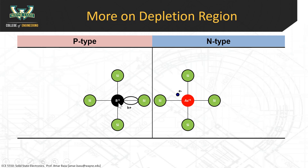Similarly, on the P-type side of the junction — let's say this is boron, a column three element — because it has one less electron, it generates a hole, which is an incomplete bond. The hole is drawn with an H-plus around it. The ion itself, the nucleus, has an effective negative one charge — just opposite of the N-type.